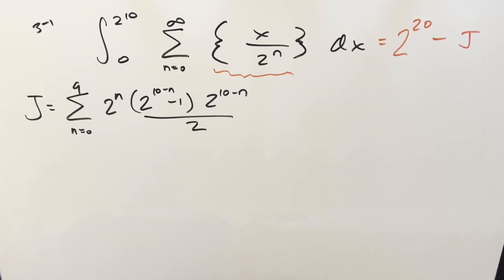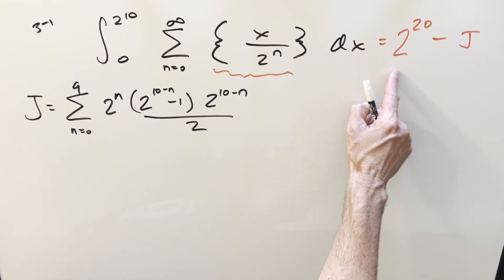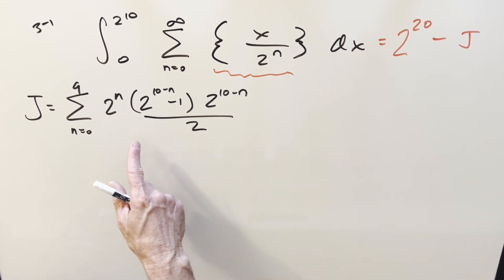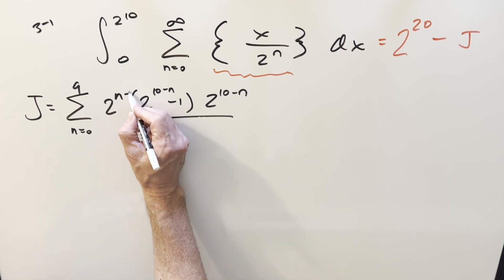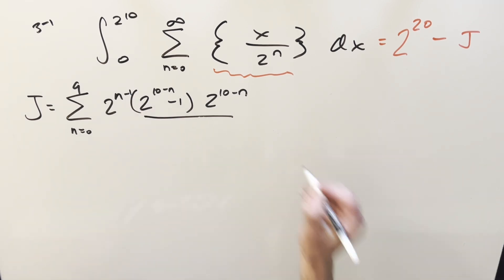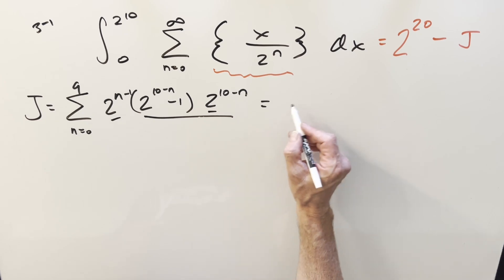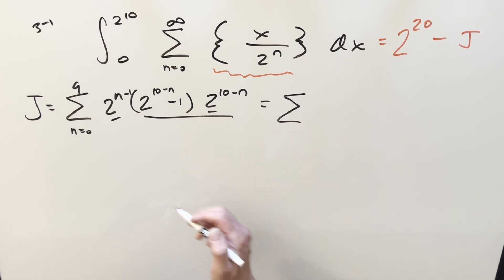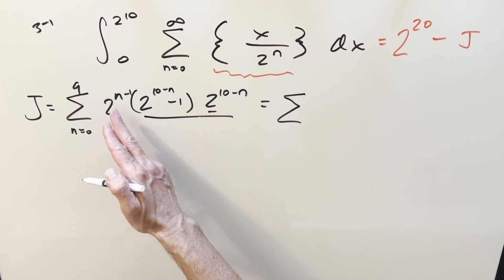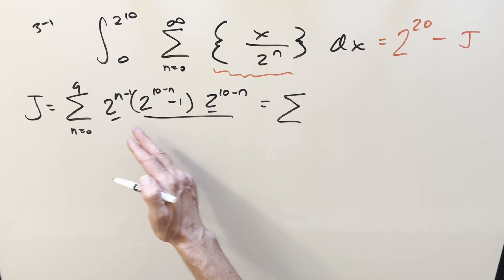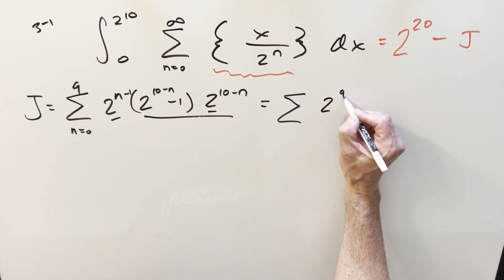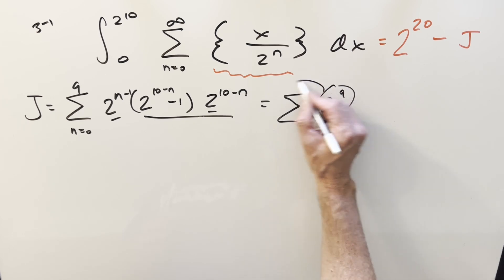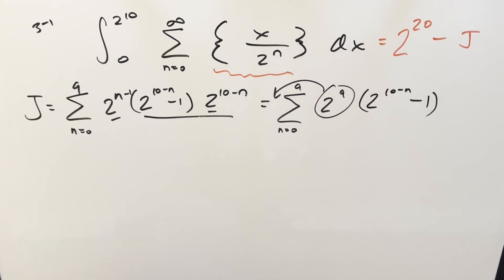Now it's all simplification with base 2. We divide out one factor of 2, turning the denominator into 2^(n−1). Multiplying together the two powers with base 2, the n's cancel, giving exponent −1 + 10 = 9. So 2^9 comes out as a constant in front of the sum.